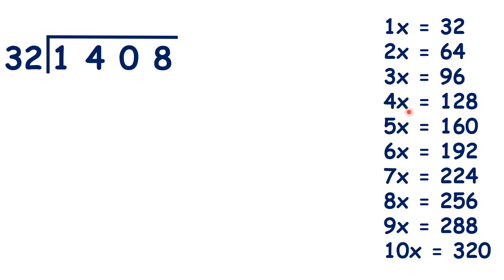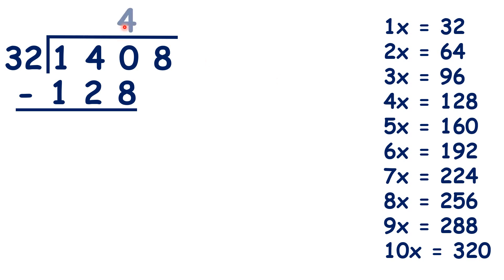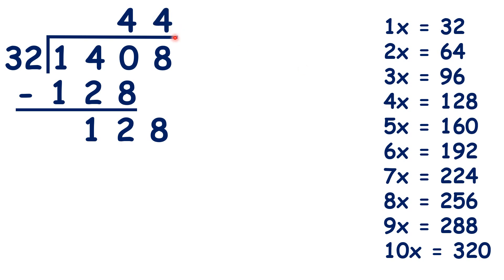We can see that 4 times 32 is 128, so let's write 128 under 140, and 4 in our answer. 140 minus 128 is 12, and we can bring down the 8, so we have 128 divided by 32. That's exactly 4, and we have nothing left to divide, so we have our answer.